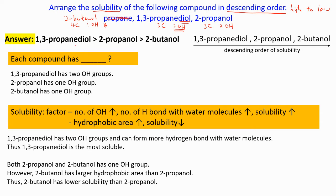So 1,3-propanediol because it has 2-OH groups, then followed by - between 4-carbon and 3-carbon, 4-carbon has larger hydrophobic area thus the solubility will be lower. So this is 4-carbon 1-OH, this is 3-carbon 1-OH.